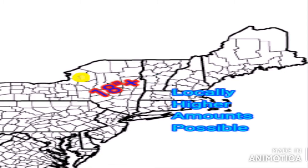Finally, I'm forecasting 18 or more inches for a specific yellow area, with locally higher amounts always possible. Based on all the models together, this is the area of highest confidence for 18-plus inches of snowfall. We'll also need to watch for higher elevation and lake-effect enhanced snowfall on top of these totals.